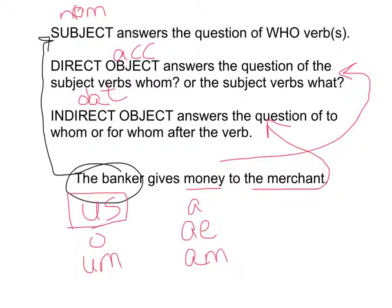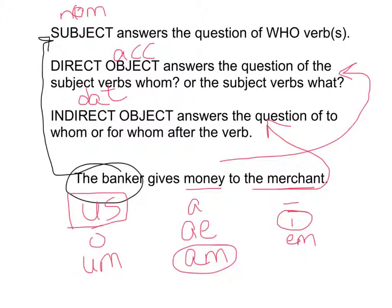The correct accusative ending is -um. And then finally, the word merchant — we determined that the merchant is the one to whom the banker gives money, so he is the indirect object. Indirect objects take the dative case. So, we would have mercator, mercatori, or mercatorem. And being a Latin genius, you know that the dative ending is the long -i there — mercatori.